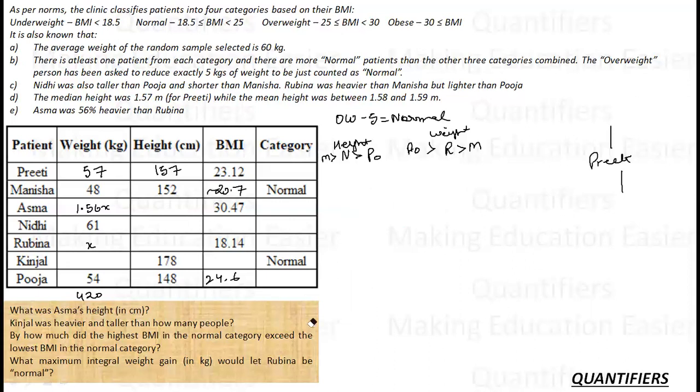I don't know anything else. So this is 23.12, so this is normal. 24.6 is also normal, so these are the four normal people. This is obviously the underweight one, this is obviously the obese one, so this is the overweight one. If this is overweight, this person needs to become 56 in order to count as normal.